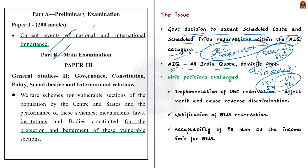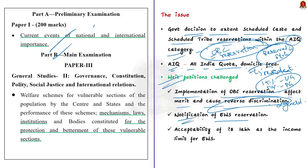As a result, writ petitions challenged this order on the grounds that the implementation of OBC reservation would affect professional merit and cause reverse discrimination against general category candidates. Another set of writ petitions challenged the notification of EWS reservation — EWS being the Economically Weaker Section — and yet another challenged the acceptability of Rs. 8 lakh as the income limit for EWS reservation.